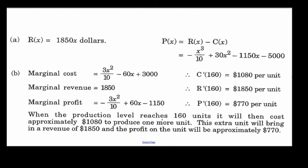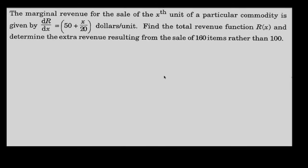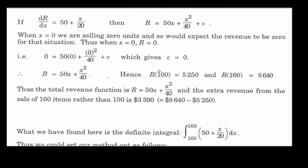In this question, the marginal revenue is given and we need to find the revenue function — so this is an integration problem. Integrating both sides gives the revenue function. Using the initial condition that R(0) = 0 (zero revenue when selling zero units), we find the constant C equals zero, giving us our revenue function.